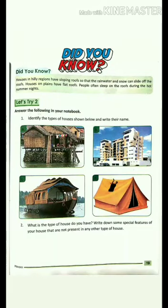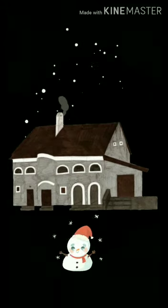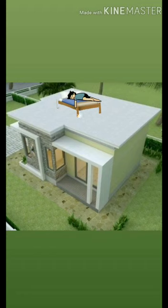Come to page number 19 of your EBS course book. Did you know? Houses in hilly regions have sloping roofs so that the rainwater and snow can slide off. Houses on plains have flat roofs. People often sleep on the roofs during hot summer nights. As we have read in the chapter, in Shimla-like hilly regions, roofs are sloping, but in plain areas, roofs are flat, and people sleep on them in hot summer nights.